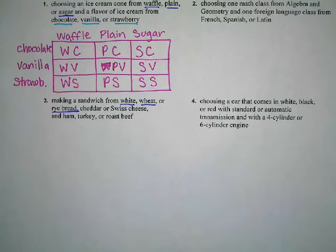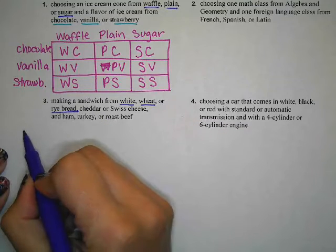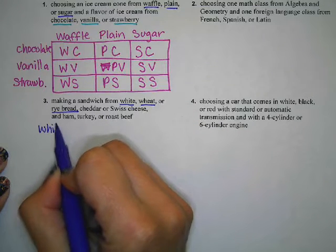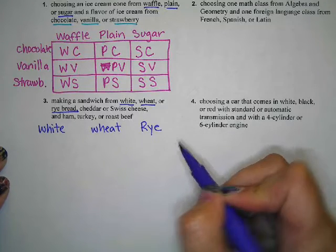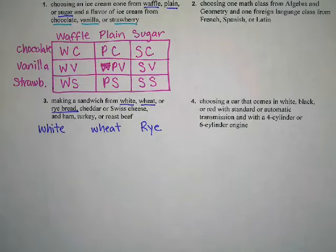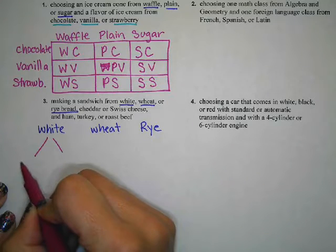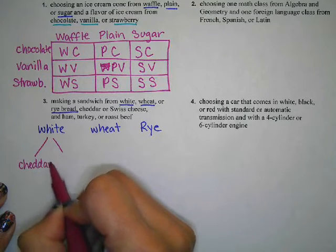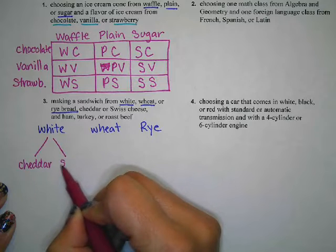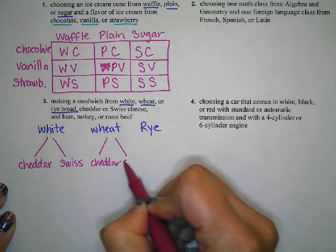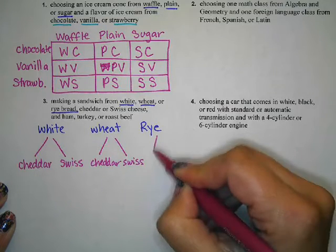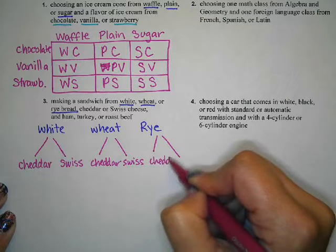This one has three different choices, so let's try a tree diagram. We have white bread, wheat bread, and rye bread. The next choice is cheddar or Swiss cheese, so each one of these has two choices. With white bread we could have cheddar or Swiss, with wheat bread cheddar or Swiss, and with rye bread cheddar or Swiss.